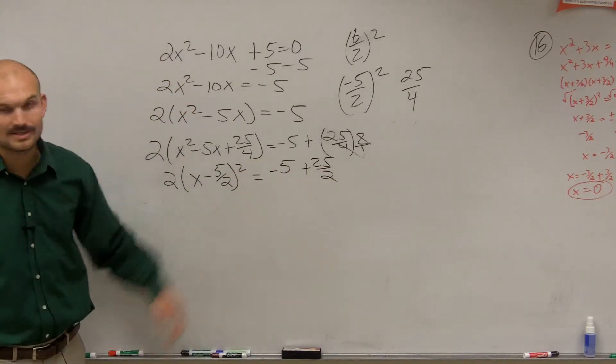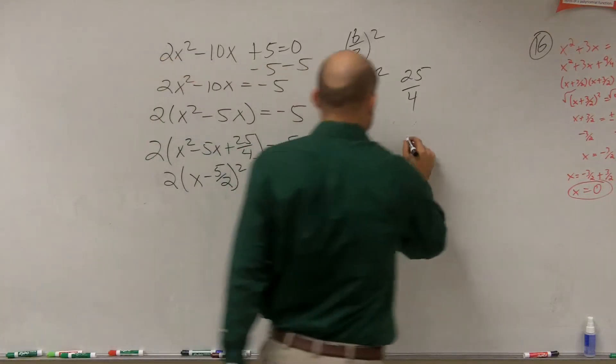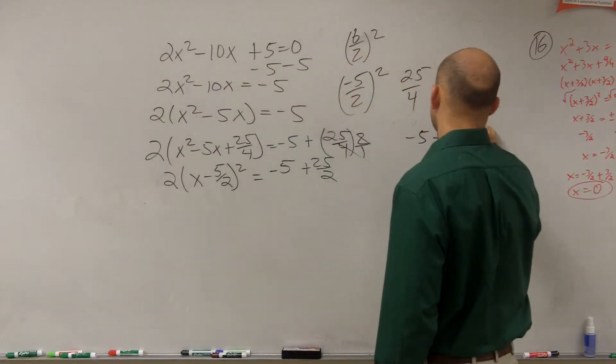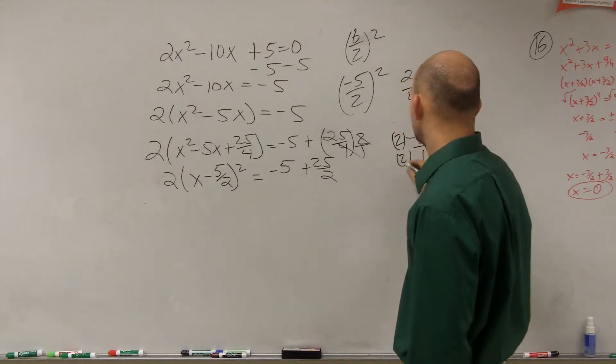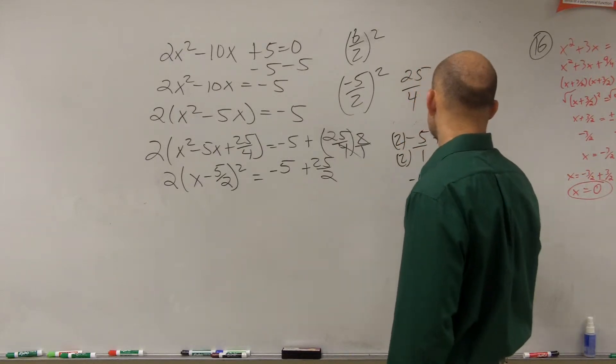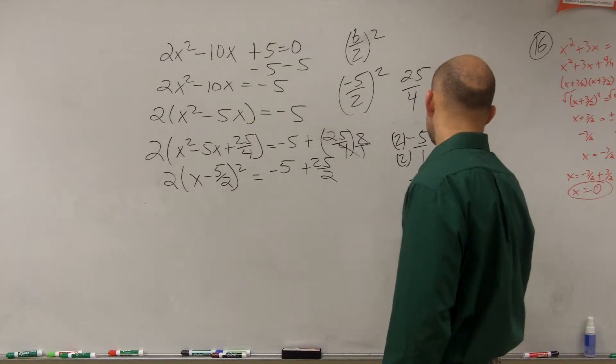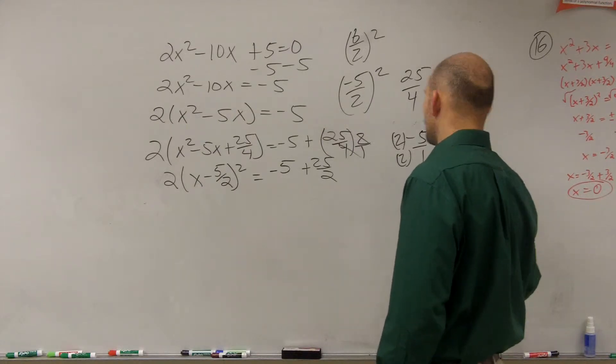But then I still need to combine these. So I do negative 5 plus 25 divided by 2. Get them to be the same denominators, negative 10 plus 25 over 2. So I have 15 divided by 2.